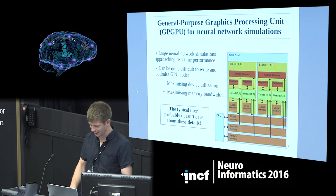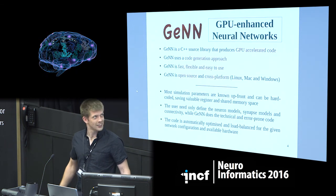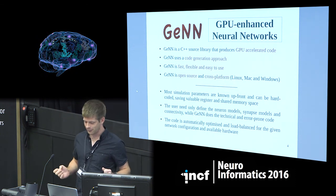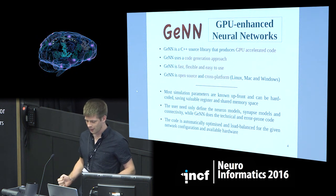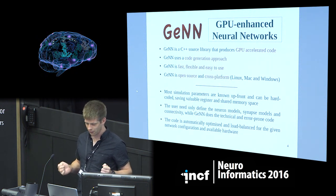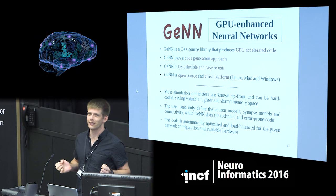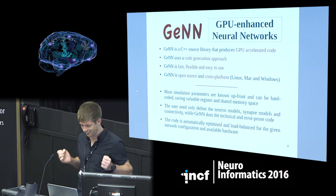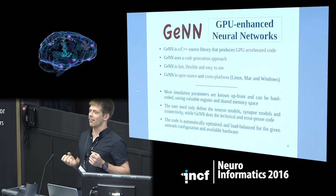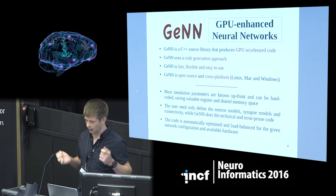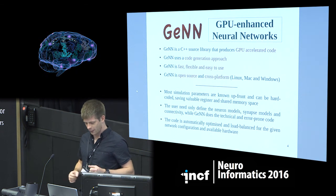Neural networks is all they care about. So enter GPU Enhanced Neural Networks — GeNN. It's a C++ source library for generating GPU code for neural networks. It uses a code generation approach, which I'll get onto. It's fast, flexible, and as I'll hopefully show in the next few slides, easy to use. It's open source, cross-platform — available on Mac OSX, Linux, and Windows.